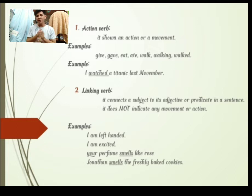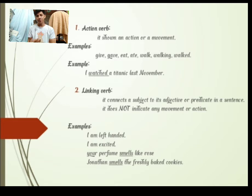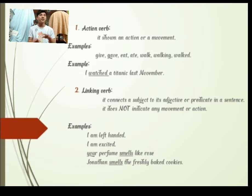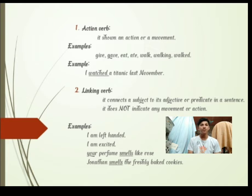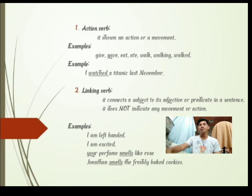We have an example: 'I am left-handed.' The word 'am' is the linking verb, and 'left-handed' is the adjective. It does not show action or movement; it connects the subject to the adjective. The linking verbs include eight forms of the verb 'to be': am, be, is, are, was, were, being, and been.